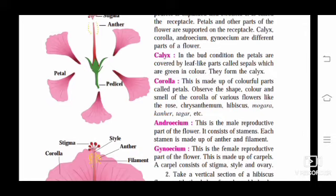Corolla: This is made up of colorful parts called petals, as seen in hibiscus, canna, etc.